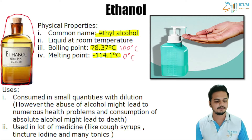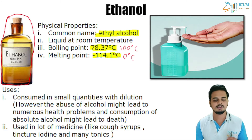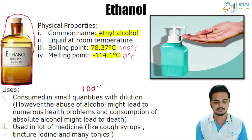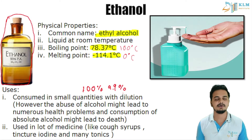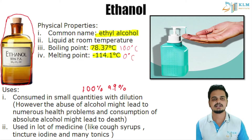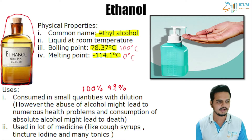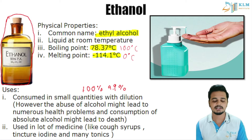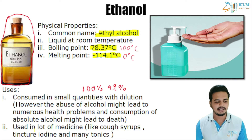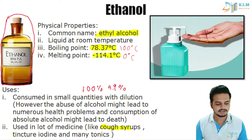Ethanol is used in alcoholic beverages and it is consumed in small quantities with dilution, because small quantities of absolute alcohol — that is 100 percent alcohol — can lead to death even in small amounts. It is diluted before consumption, and continuous consumption of diluted quantities can lead to many health complications.